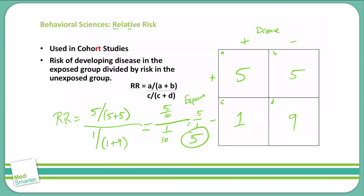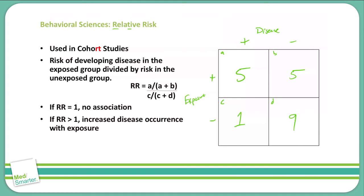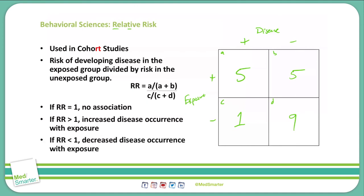In this example, there is a 5 times greater risk of developing cancer with exposure to radiation. A few things to note on relative risk: if relative risk equals 1, there is no association between disease and exposure. If relative risk is greater than 1 — as in this example where it was 5 — that means there is an increased disease occurrence with that exposure. If relative risk is less than 1, that means the exposure actually decreases the risk of that disease.